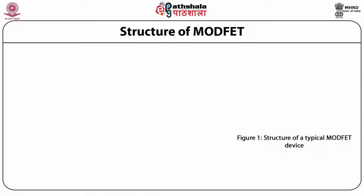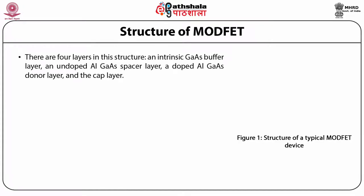Structure of ModFET. The structure of a typical ModFET is shown in this figure. As you can see, there are four layers in this structure: an intrinsic gallium arsenide buffer layer, an undoped aluminium gallium arsenide spacer layer, a doped aluminium gallium arsenide donor layer, and lastly the cap layer. There are two ohmic contacts and one gate electrode for providing the electrical connections of the transistor.